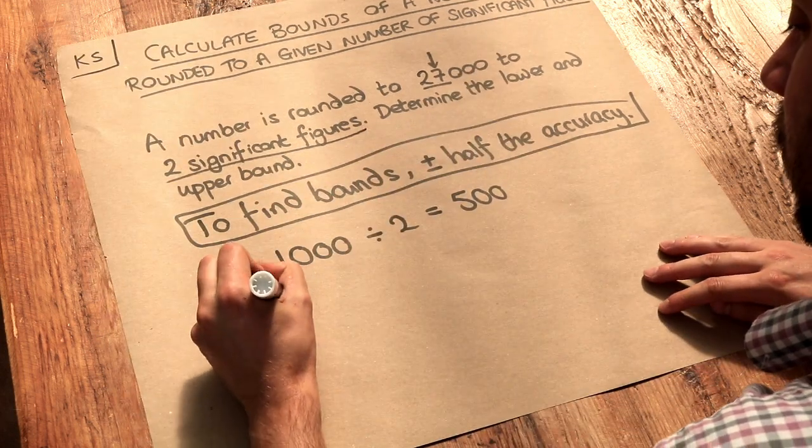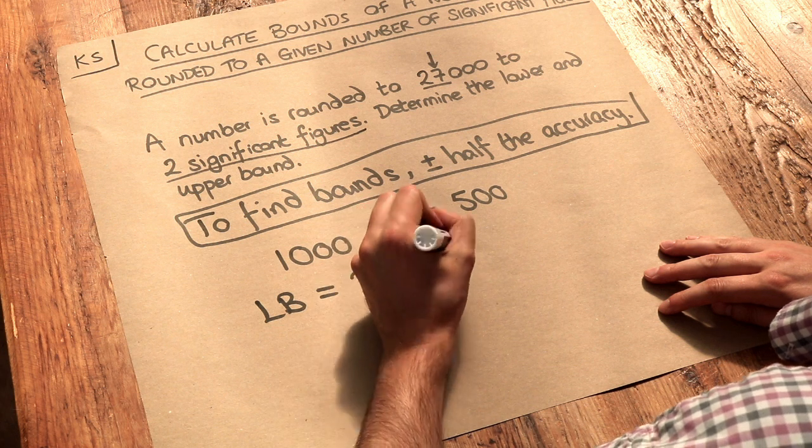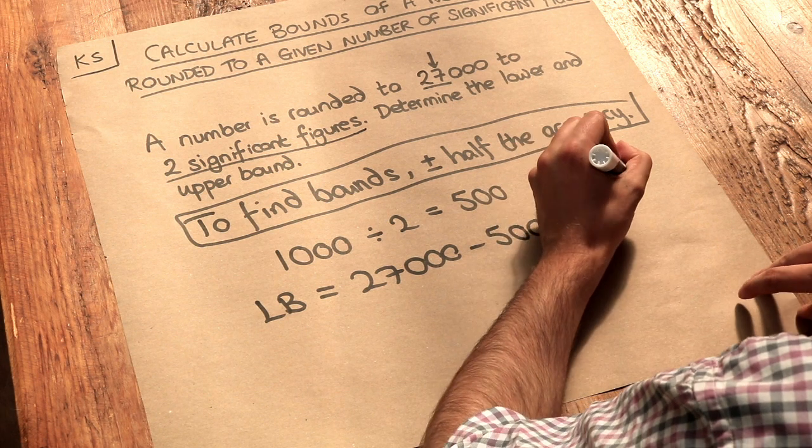So the lower bound, or LB for short, is going to be 27,000 minus the 500, and that's going to be 26,500.